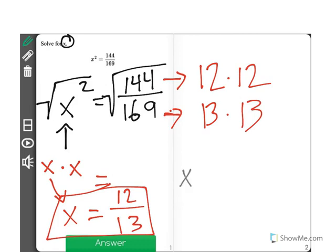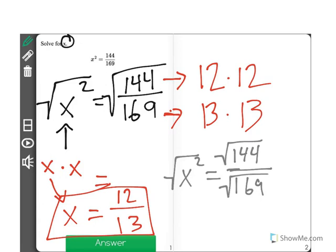Now, something to take note of here. Notice how when I found the square root of this fraction, what I did was I actually found the square root of all three parts: x squared, the numerator, and the denominator. It's very important to make sure that you find the square root of both numerator and denominator in order to get the correct answer of x equals 12 thirteenths.